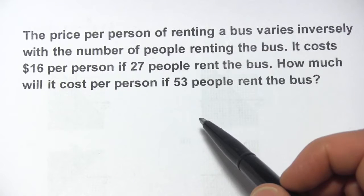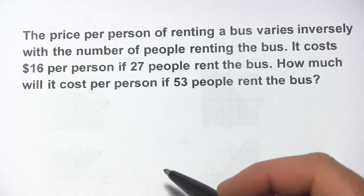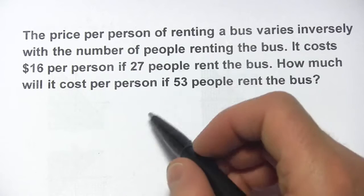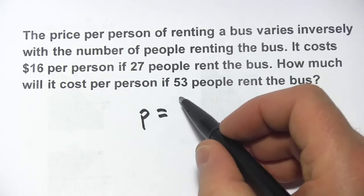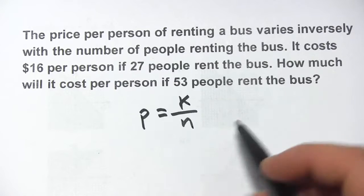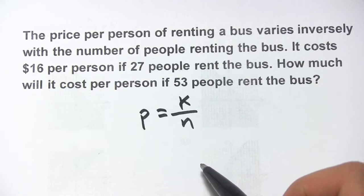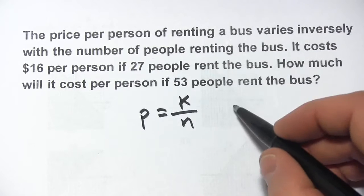It costs $16 per person if 27 people rent the bus. So let's think about this, the price varies inversely with the number of people, so price and number of people. And then they tell us it costs 16, that's our price.